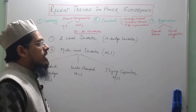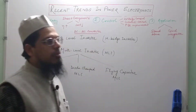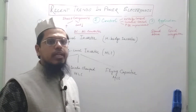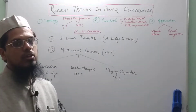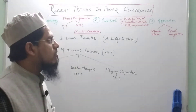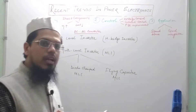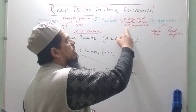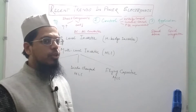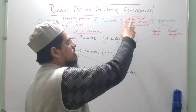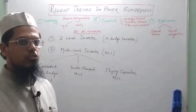The second area in which development is taking place in power electronics is the control part. Any power converter consists of two parts: one is the topology and the other is the control. In control we basically deal with output voltage control, current control, or power quality improvement in the converter. These three are the broad sub-areas of the control part of power electronics.